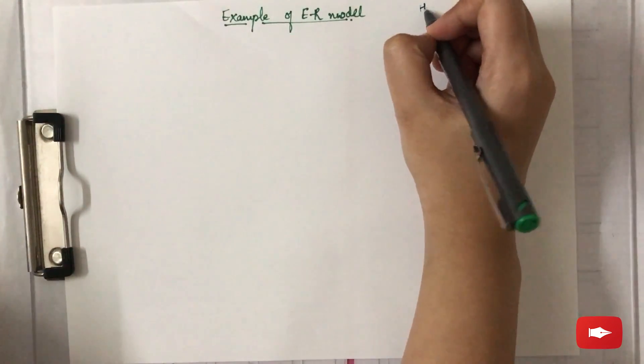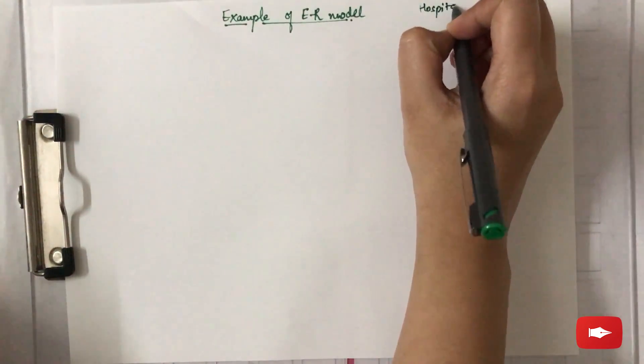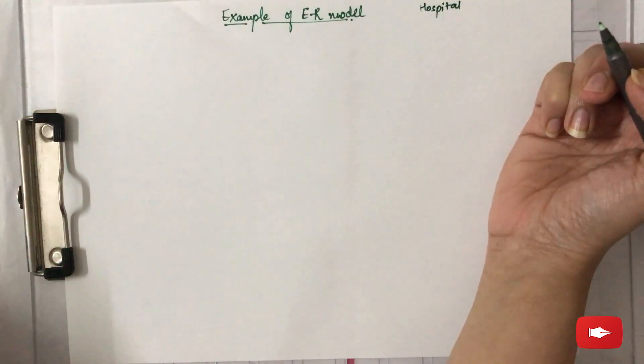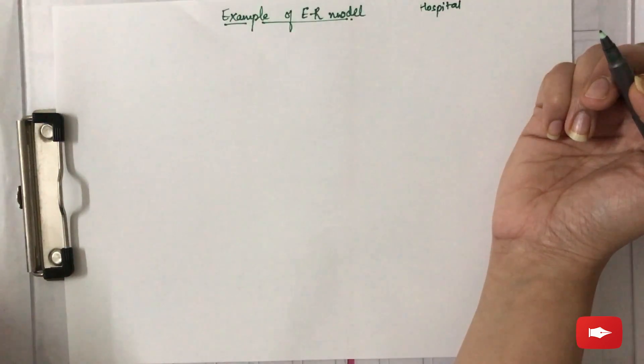In this video we are going to see an example of an ER model. Let's say we have to draw an ER diagram for a hospital with a set of patients and medical doctors. We need to first think about what entities and attributes we are going to use.